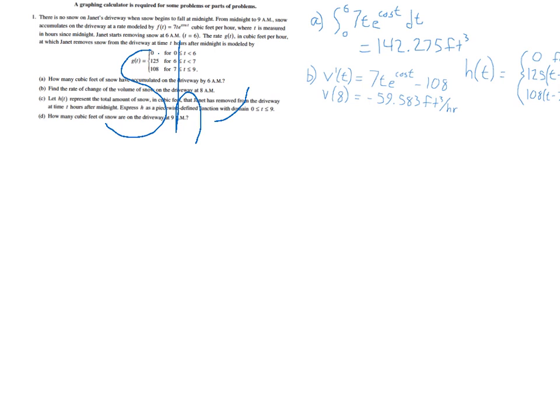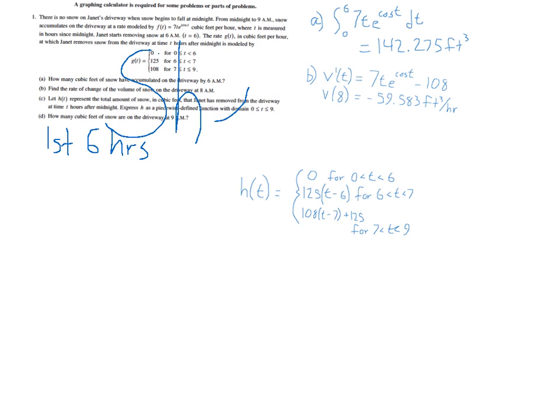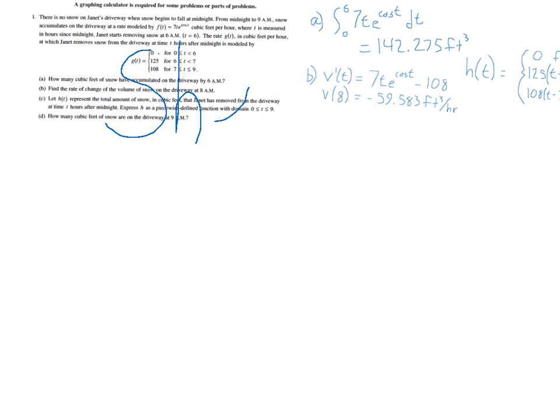So for part D, I know that in the first six hours, like we said in part A, there are 142.275 cubic feet. Now we have to figure out how much snow accumulates in the next hour. And of course, in the next hour, there is snow not only falling, but then snow being removed by Janet at a rate of 125 cubic feet per hour.